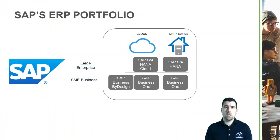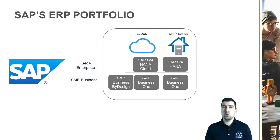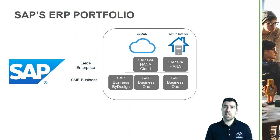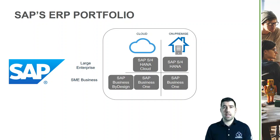It's probably worthwhile starting off by explaining a little bit about SAP's ERP portfolio, which is really made up of three core products. One is called S4HANA, which is SAP's large enterprise product and can be deployed on-premise or in the cloud.